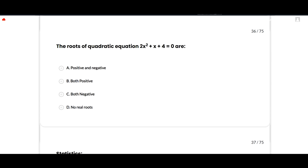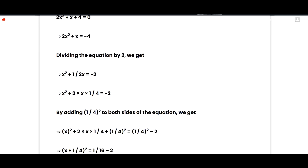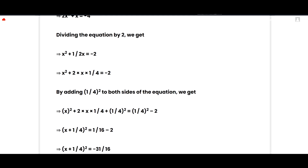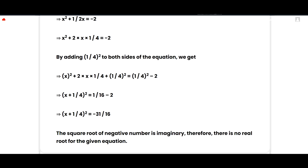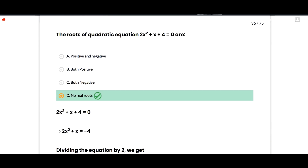The roots of 2x² + x + 4 = 0: the correct option is no real roots. Rearranging: 2x² + x = −4. Dividing by 2 and completing the square: (x + 1/4)² = 1/16 − 2 = −31/16. Since the square root of a negative number is imaginary, there are no real roots. Option D is correct.